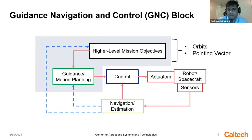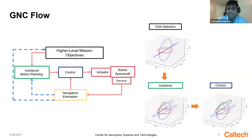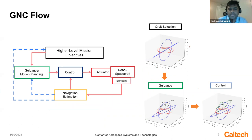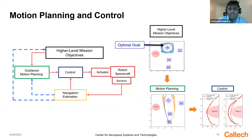The high-level mission objectives — which orbits to get to and which areas to point to — are integrated with the motion planning and control architecture. In the high-level objectives you select the orbits and pointing vector; motion planning designs a trajectory to reach that orbit; and the control inputs forces and torques to move in the area of interest. Here are two example orbits: red orbits are initial, blue are target.